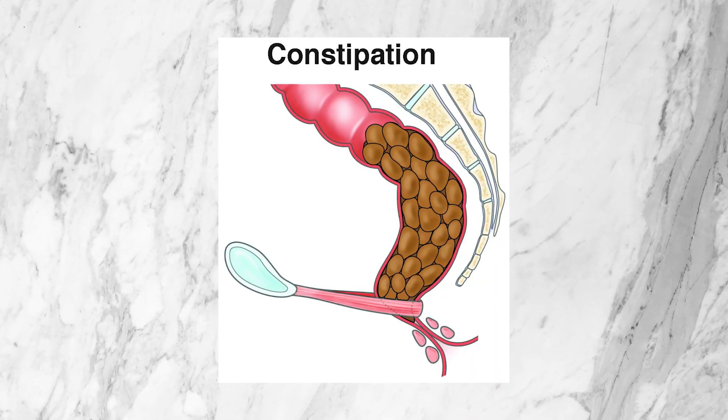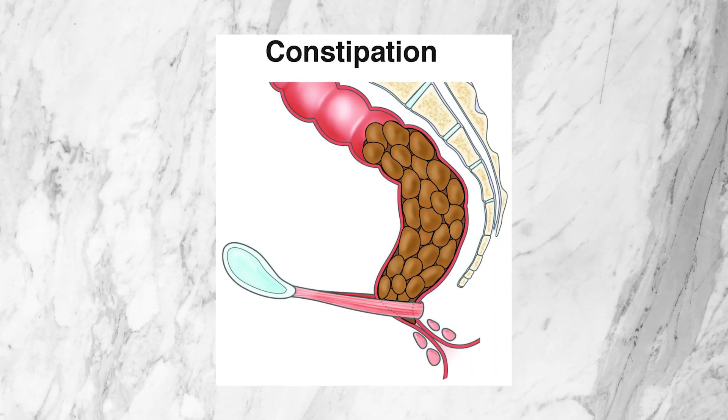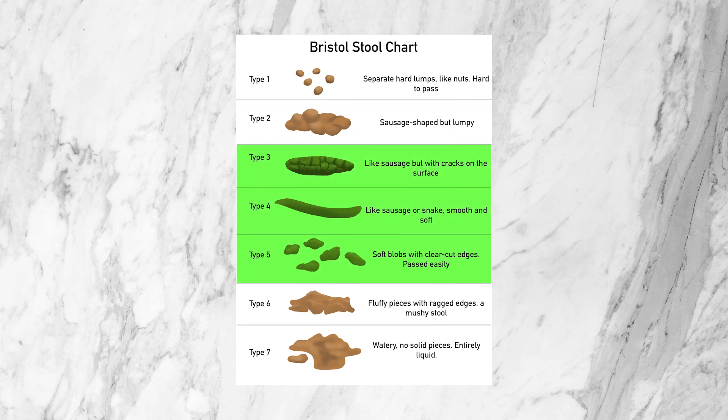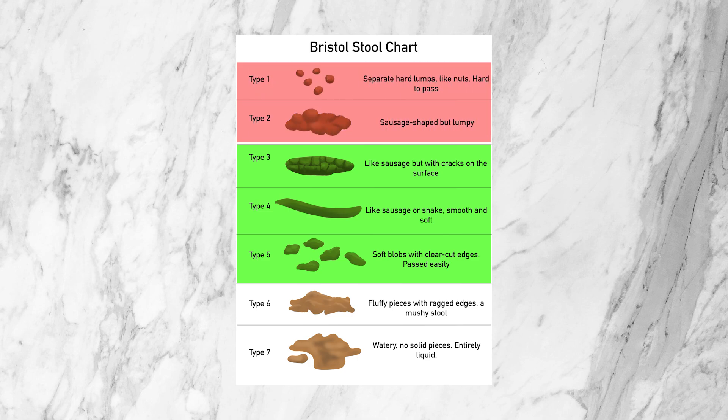The second major symptom people experience with IMO is constipation. Not everybody with IMO will experience constipation — it's actually possible to have loose stools and still have IMO — but the vast majority of people will have some degree of it. Constipation can mean you don't pass a regular bowel movement daily, or it can mean your bowel movements are small, hard, tiny pellet-shaped stools. Looking at the Bristol stool chart can help clarify this: if your stool is in the range of three to five, it's probably good; if you're in the one to two range, you may be dealing with constipation.